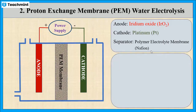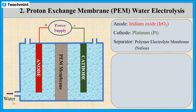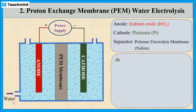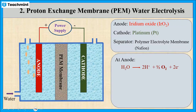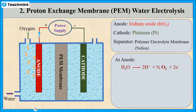In this electrolysis process, only deionized water is injected into the anode chamber. At anode, water is split into oxygen gas and protons with the liberation of electrons.